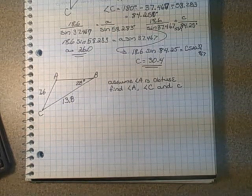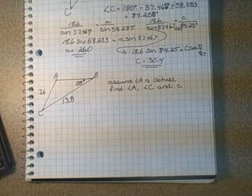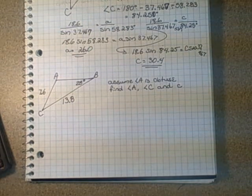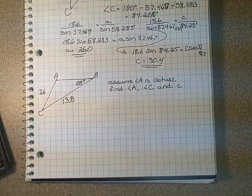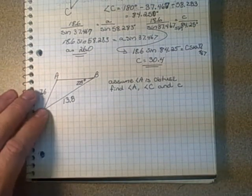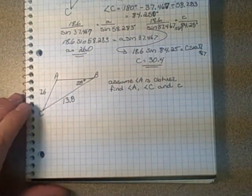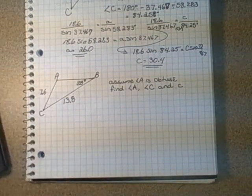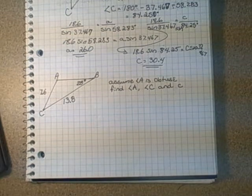We're still working with the law of sines in section 3.3 in Math C30. What we're going to do is an example of an obtuse triangle. I've got it drawn here, triangle ABC, and we're assuming that angle A is obtuse.